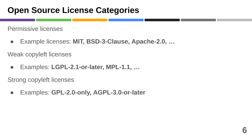Then there are the copyleft licenses, and they require, under certain circumstances, that you pass on your own source code that modifies or extends the open source software to a set of third parties — your customers — either directly or when they come asking. So this second aspect of having to provide your source code is specifically the copyleft license obligation, which is so prominent in people's minds that it has led to its own category: copyleft licenses.